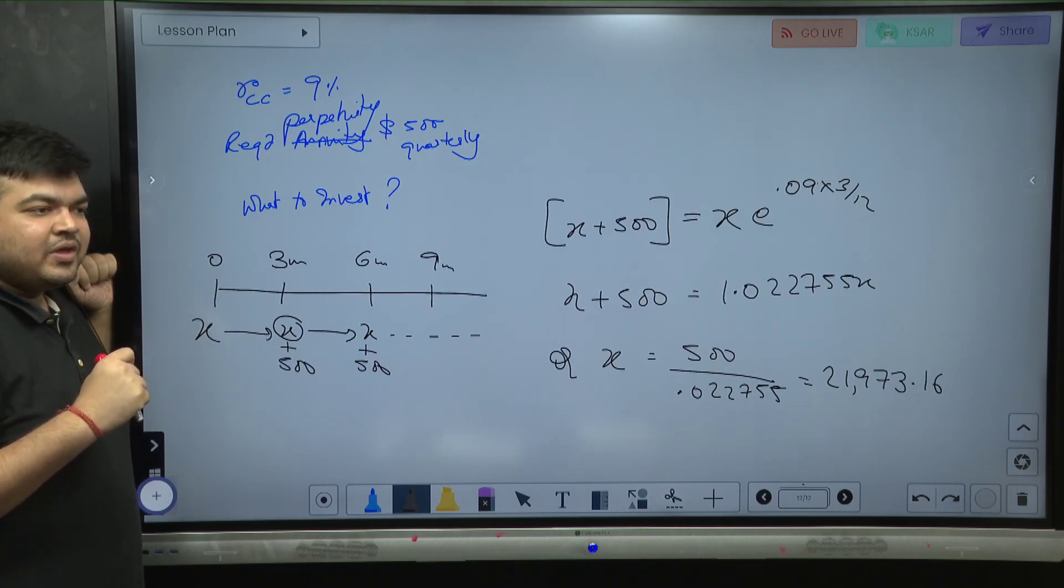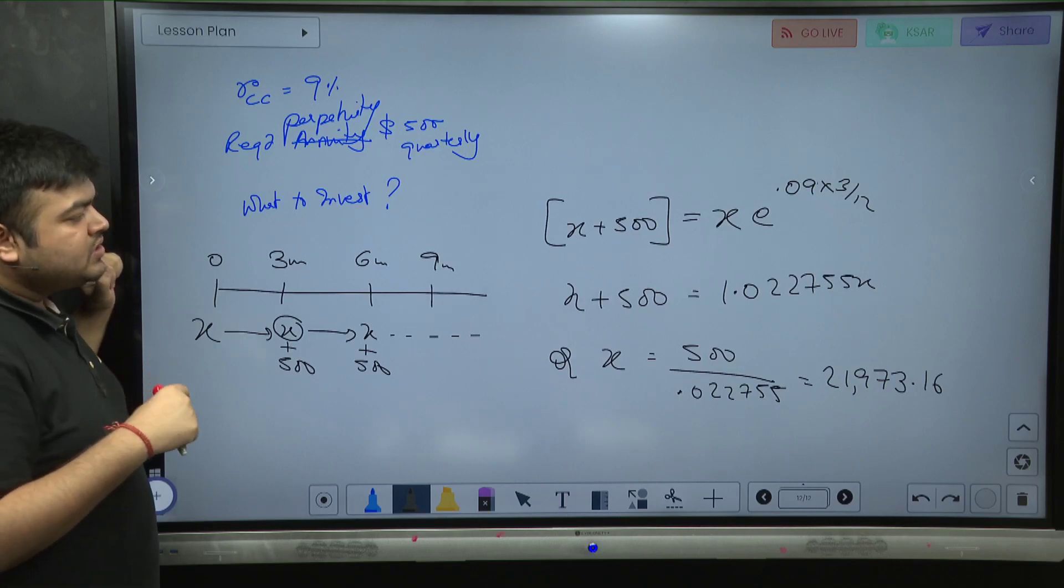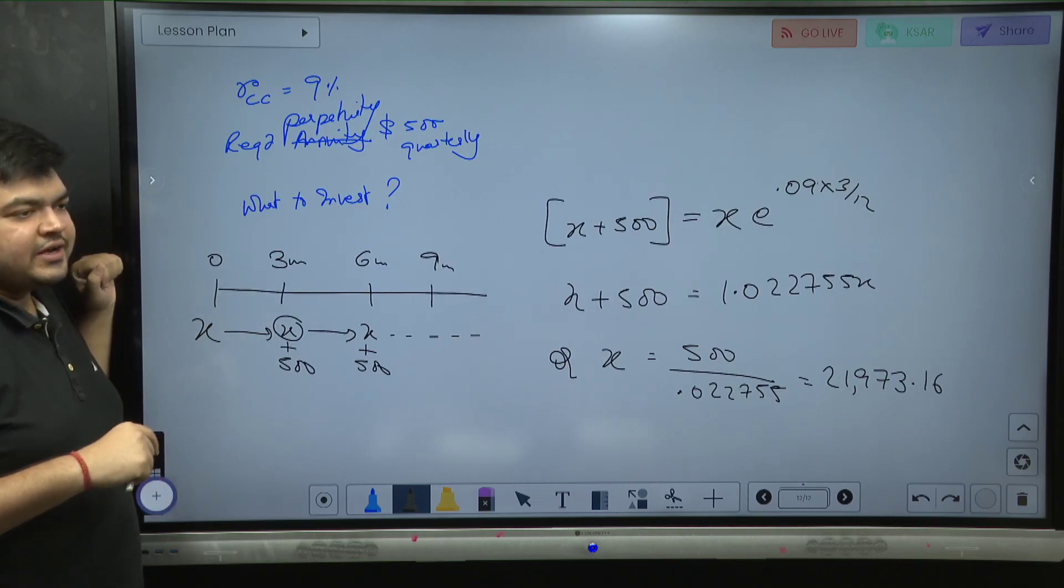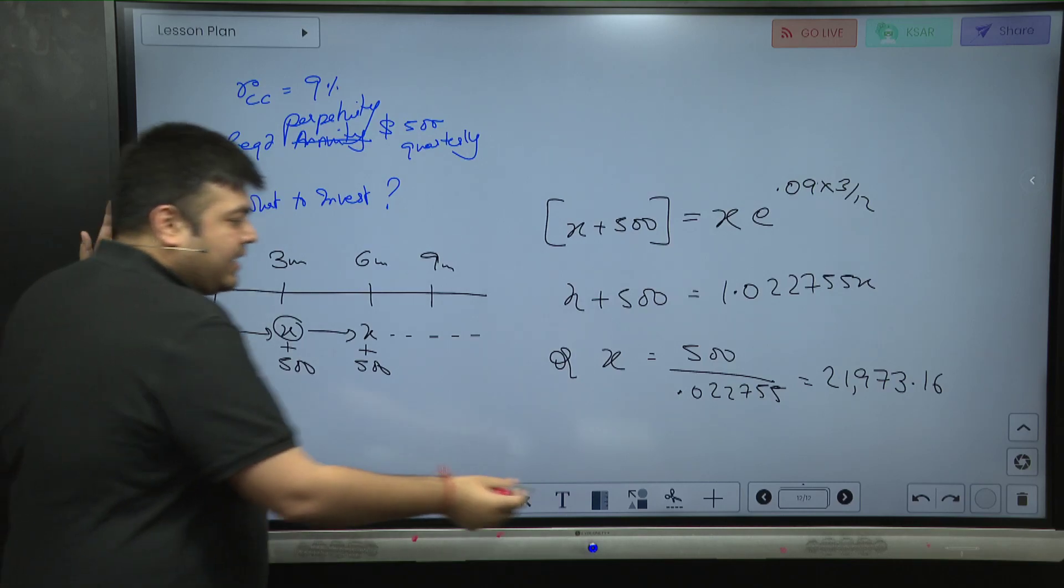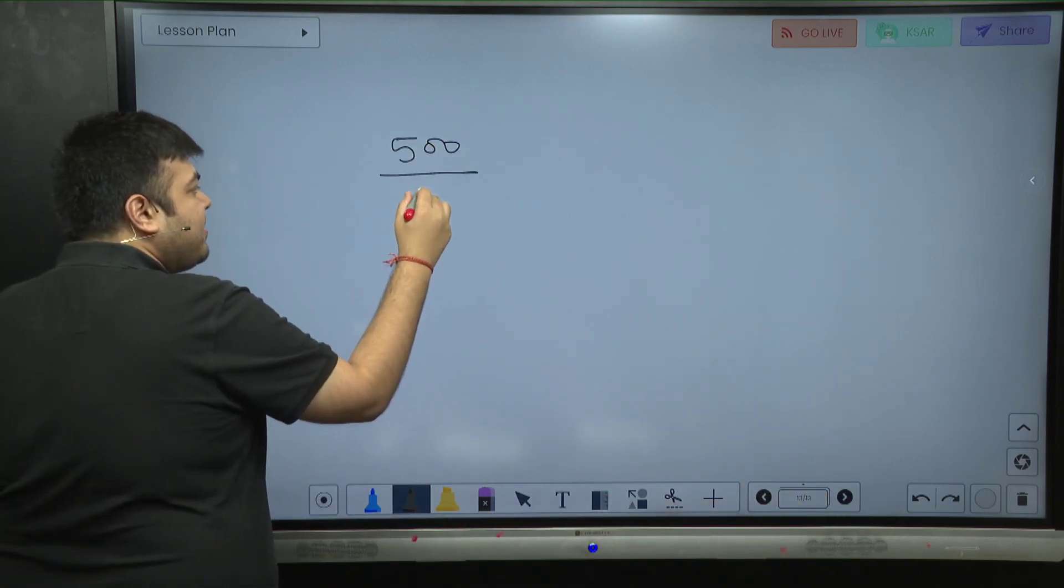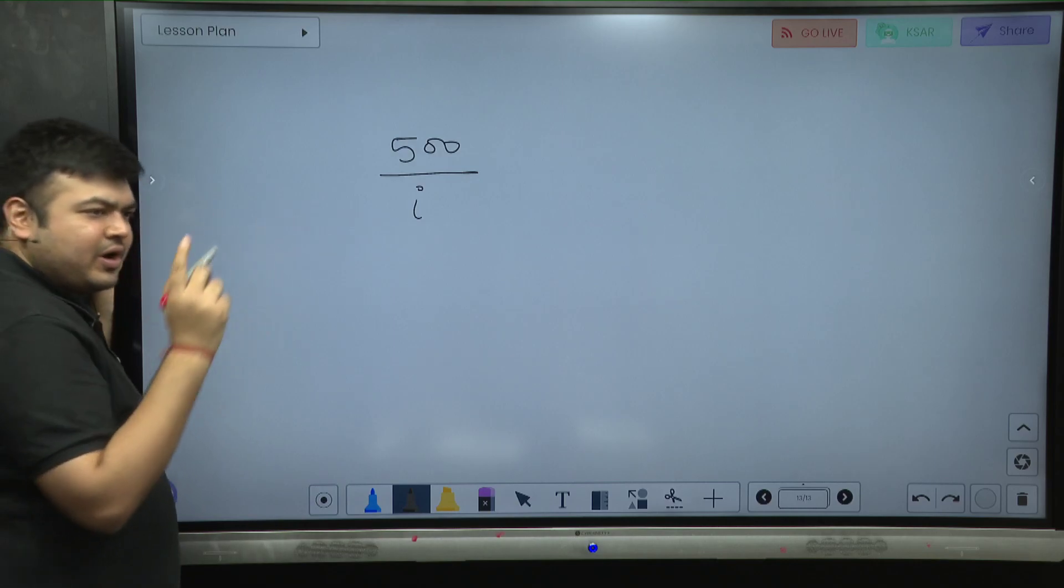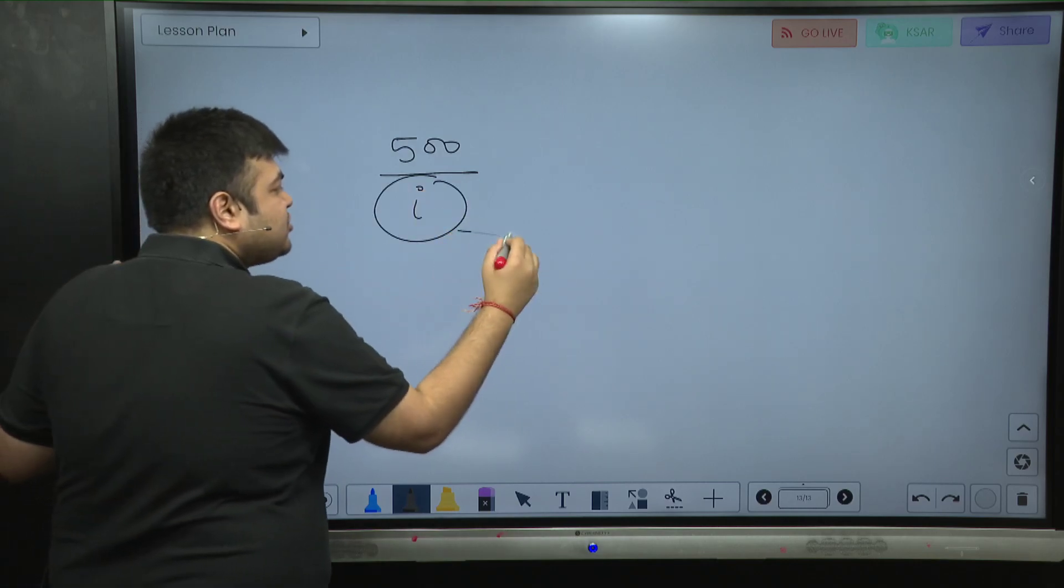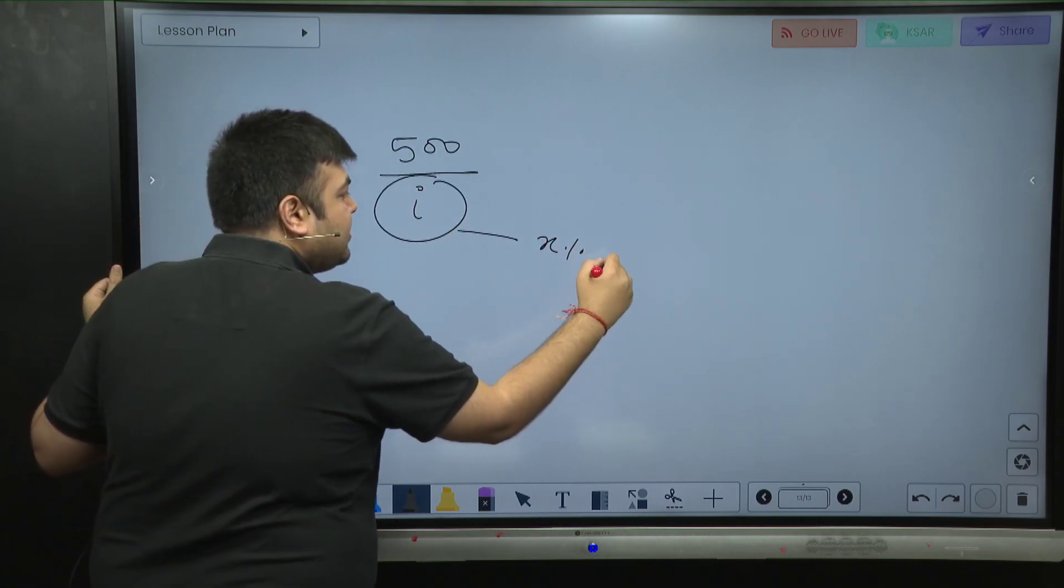Another way of looking at it could be that we understand the perpetuity formula. My answer is supposed to be 500 divided by i, the interest rate i by y, whatever. Now this rate has to be x percent per annum.